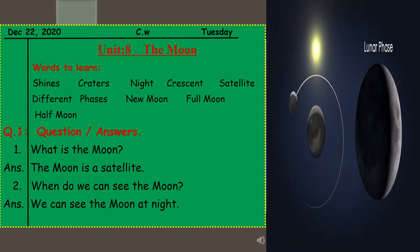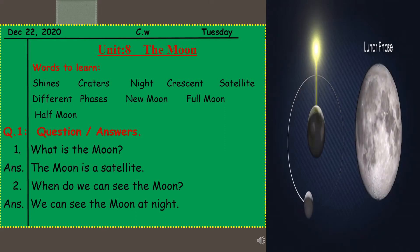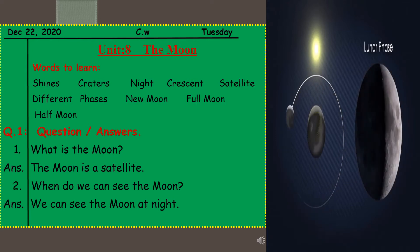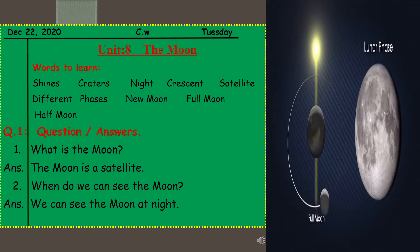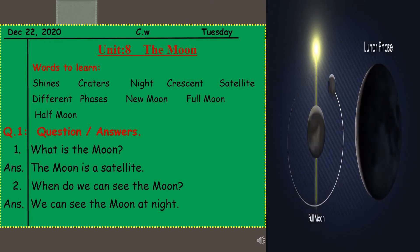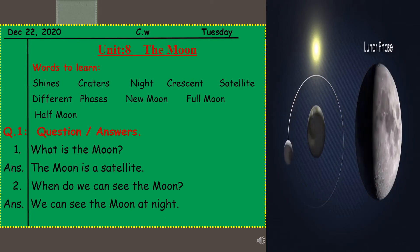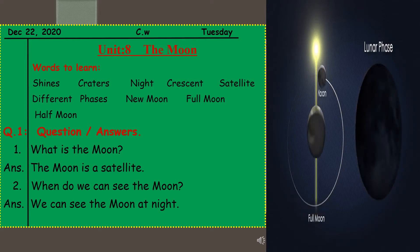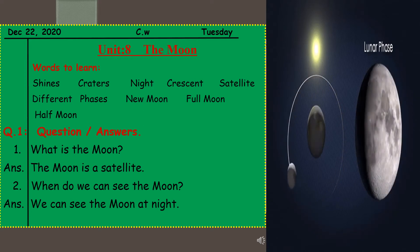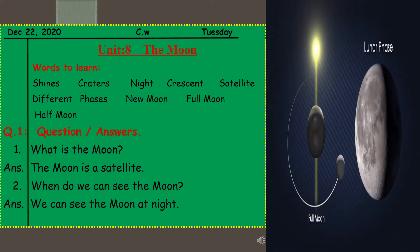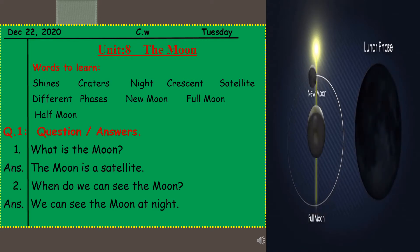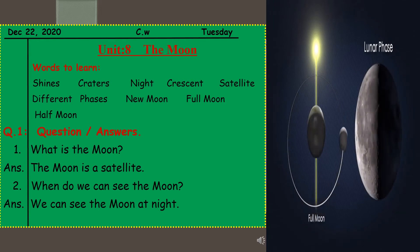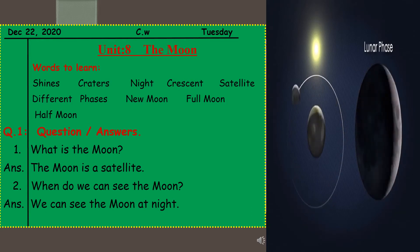Dear students, take out your science notebooks, draw the margin line, write down the date and day. Today is December 22 and the day is Tuesday. In the first line of your page you have to write unit 8 and it is the moon. We have to write today was to learn and question answers, question 1 and 2.